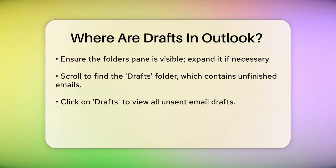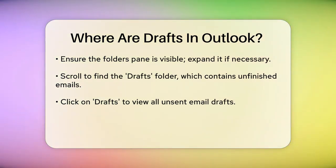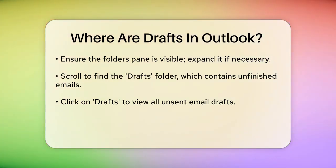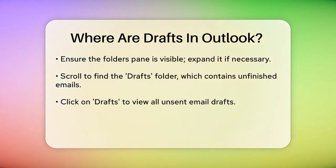Once the folders pane is visible, scroll through the list until you find the folder labeled Drafts. This is where Outlook automatically saves your unfinished emails. Click on the Drafts folder to open it, and you'll see a list of all the email drafts you've started but haven't sent yet. Look through this list to find the draft email you're missing.